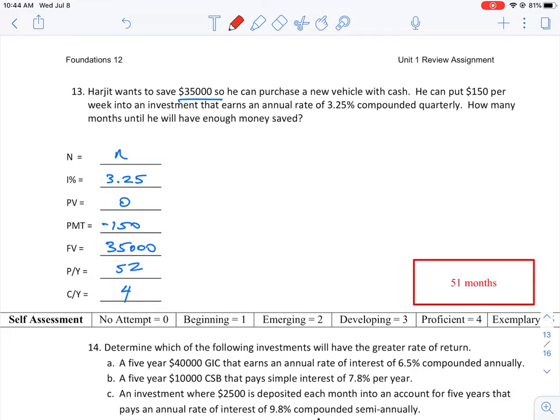He can put $150 per week into an investment earning an annual rate of 3.25% compounded quarterly. So that means over the course of one year, he's going to do 52 payments. And compounded quarterly is the compounding or the coupons per year.